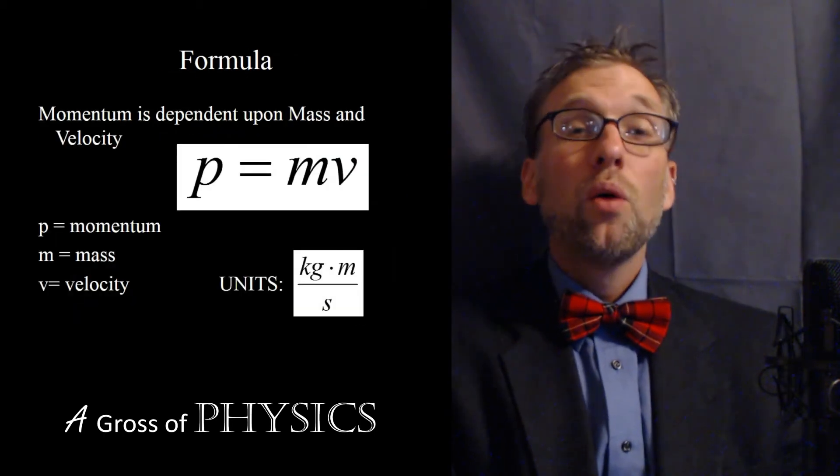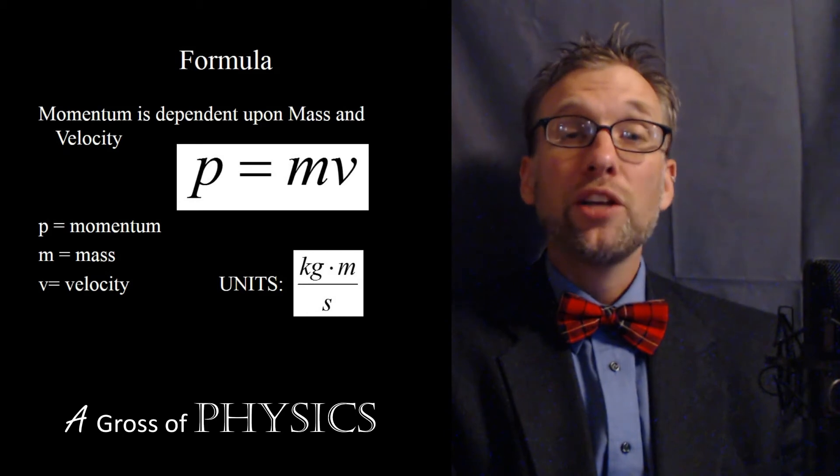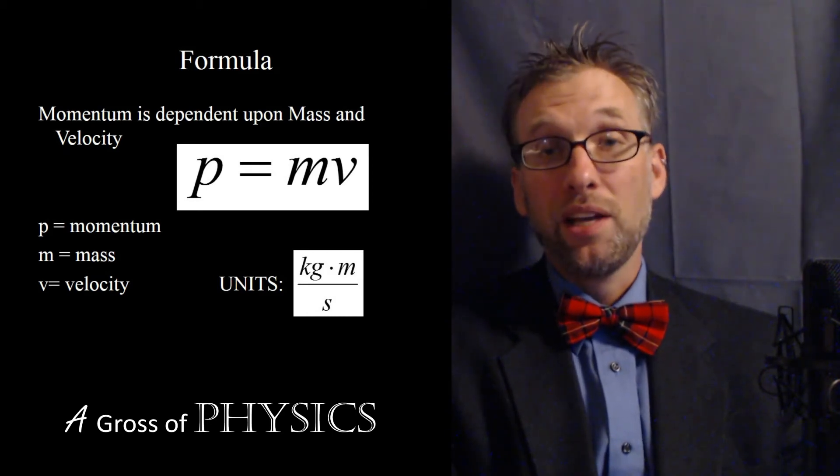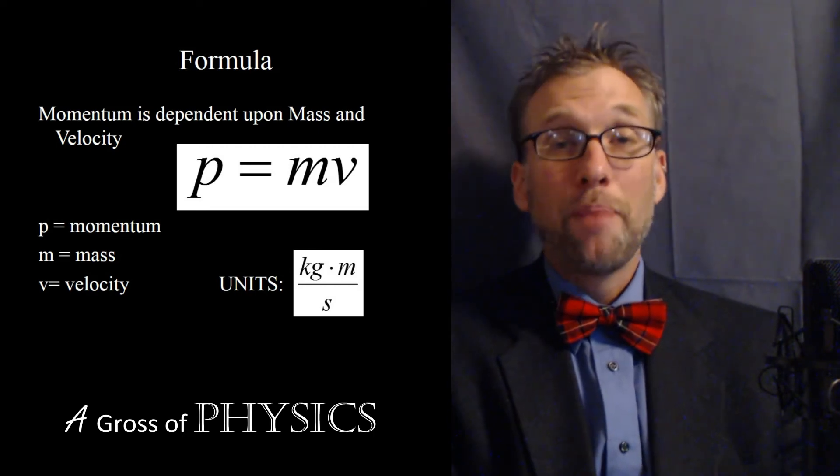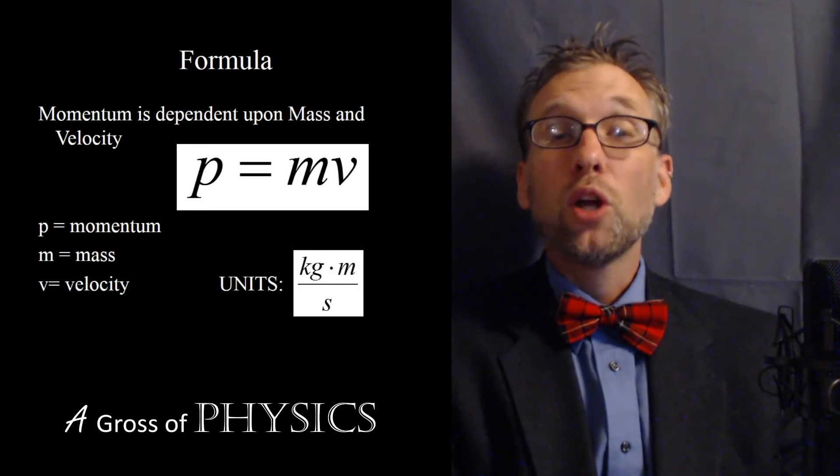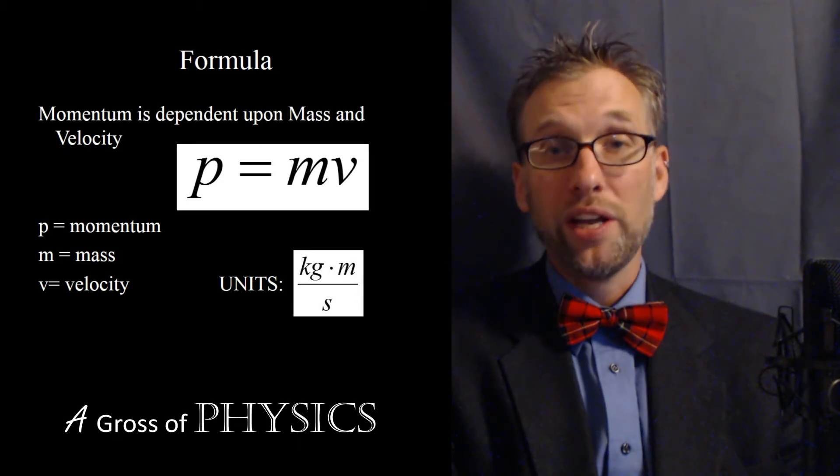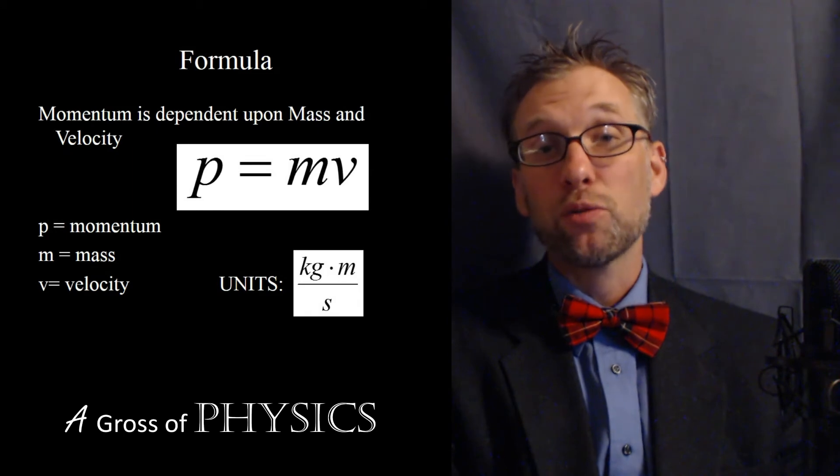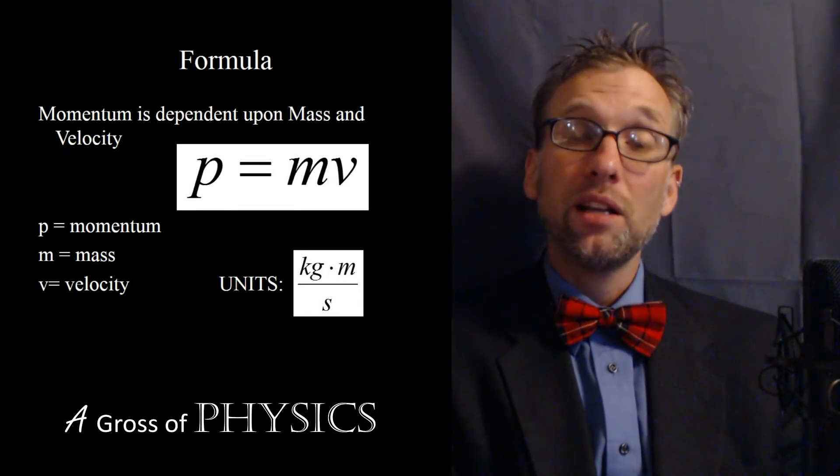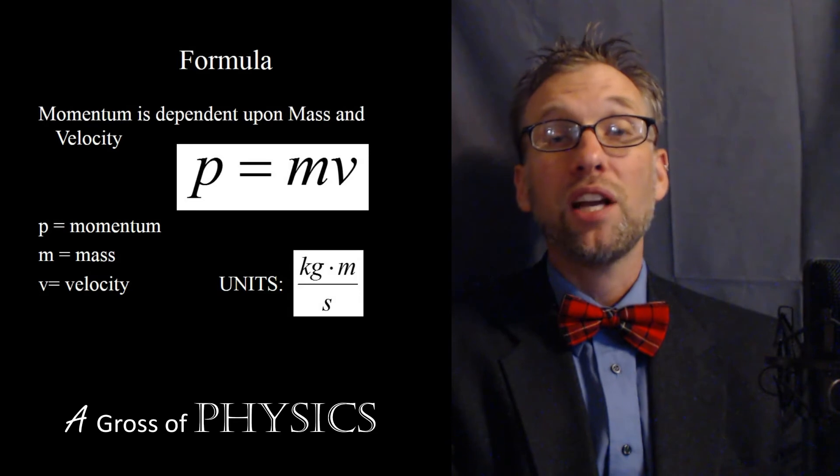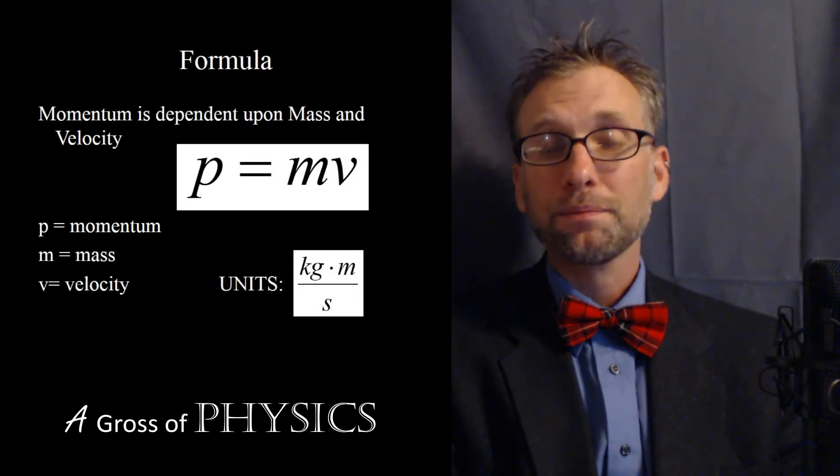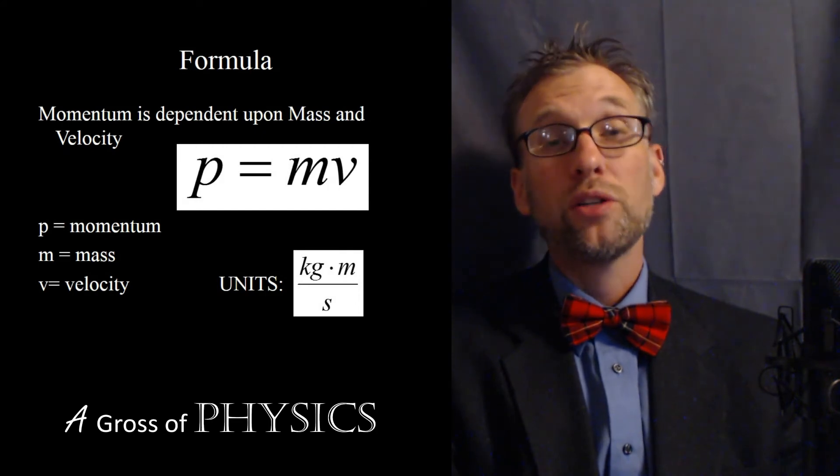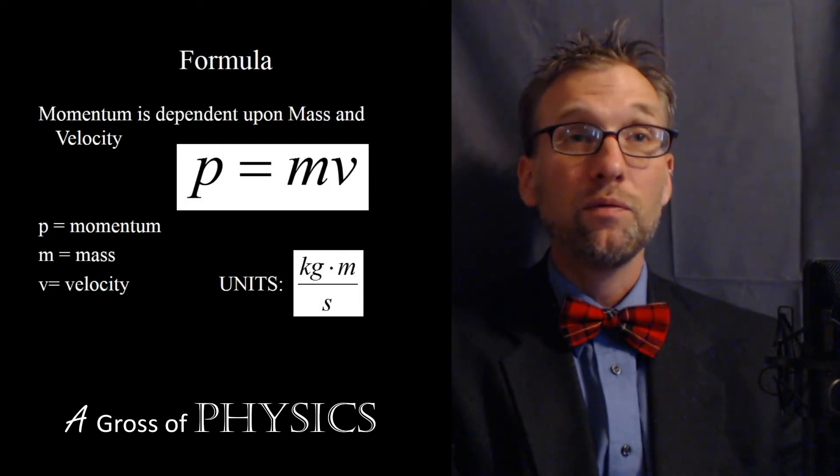For now though, we're going to have an equation for momentum and the equation is p equals mv, and it's a lowercase p. Uppercase P is going to be reserved mostly for power, but for now lowercase p equals mv is our equation. Now the m is mass measured in kilograms. The v is velocity measured in meters per second. So if we combine the kilograms and the meters per second, we end up with a unit of kilogram meter over second.